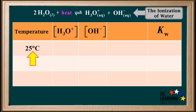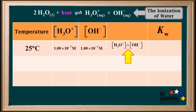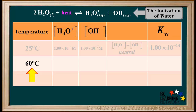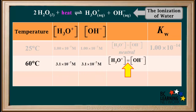When the temperature is 25 degrees Celsius, the concentration of hydronium and the concentration of hydroxide are both 1×10⁻⁷ molar. The concentration of hydronium is still equal to the concentration of hydroxide, so the water is neutral. Kw equals the product of these concentrations, which is 1×10⁻¹⁴. At 60 degrees, the concentration of hydronium and hydroxide are both 3.1×10⁻⁷ molar. Even though they're both higher than at 25 degrees, they are still equal to each other, so the water is still neutral. Kw equals (3.1×10⁻⁷)², or 9.6×10⁻¹³.